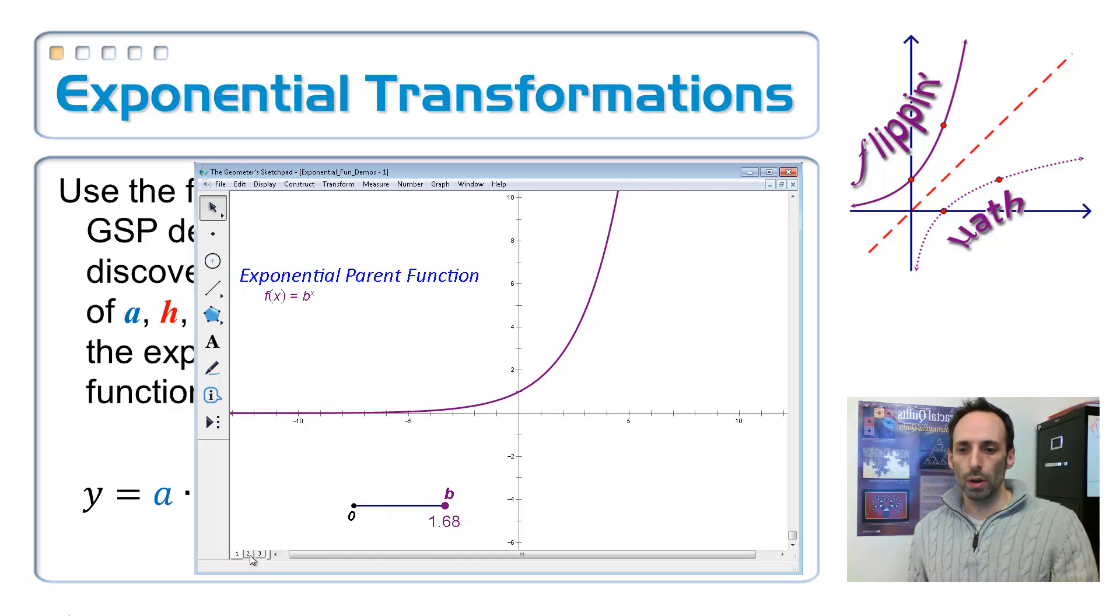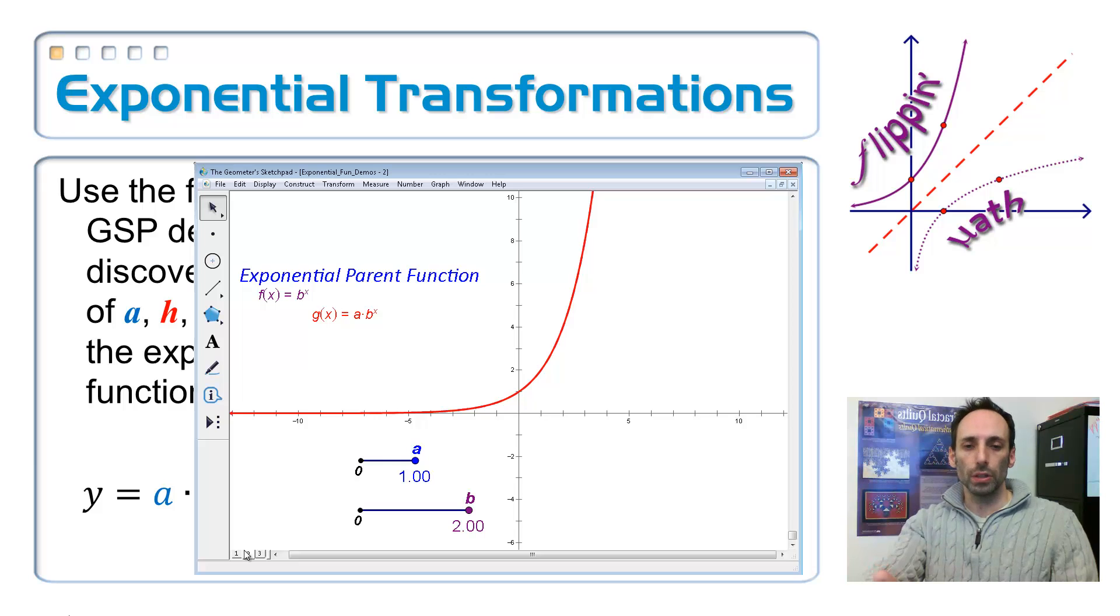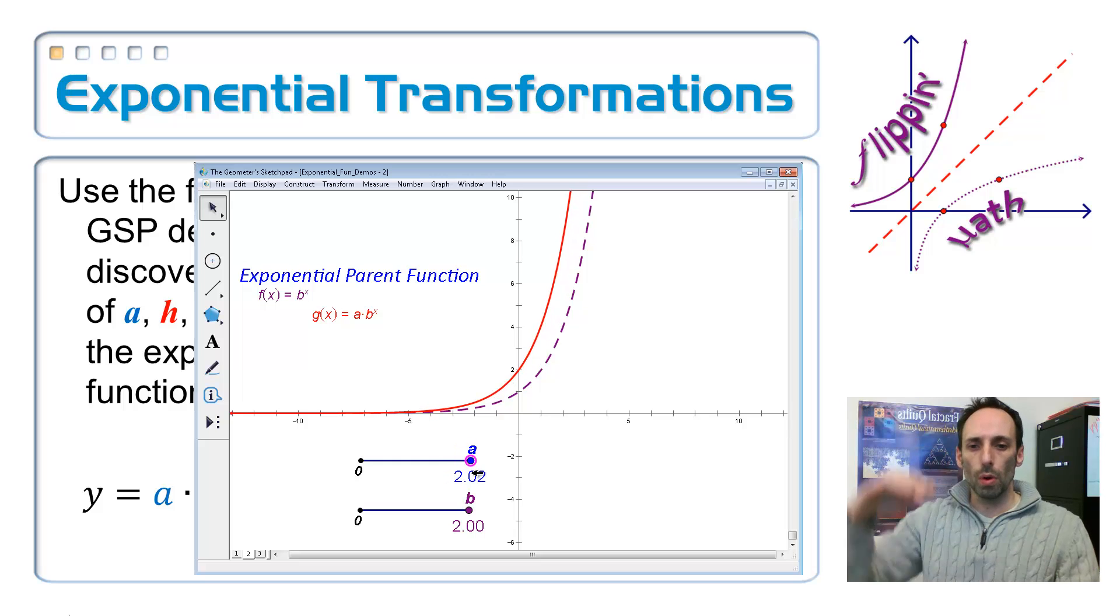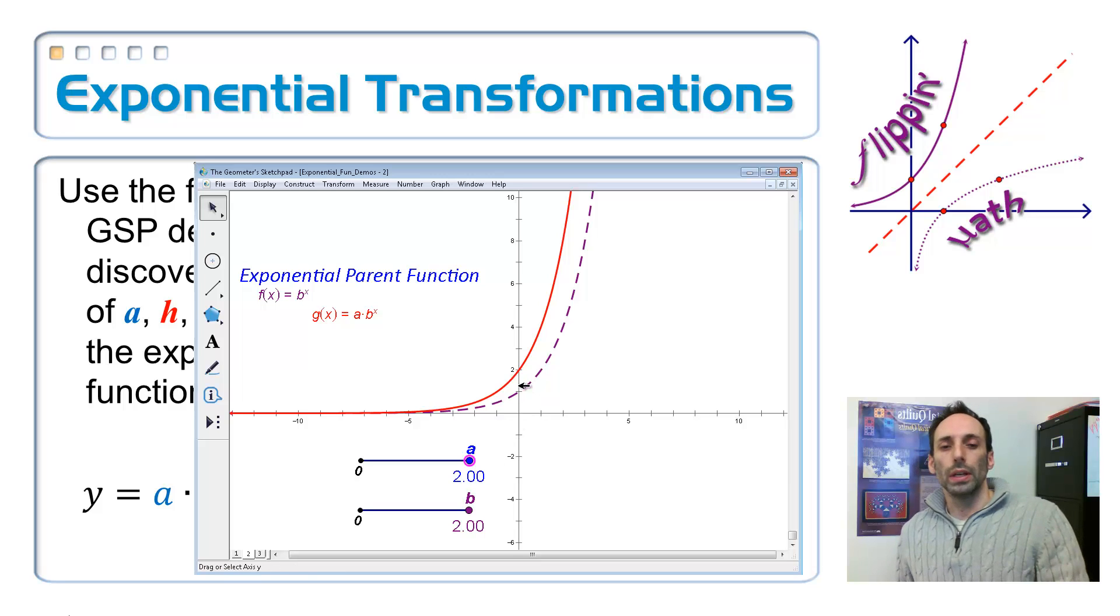Okay, so now let's look at the next part where I just pick a B value, and now let's look to see what the A value does. So the A value is being multiplied times B to the X. If I make it bigger than 1, of course it makes it steeper. It's multiplying all the Y values. So let me put it at, let's say, 2. So look at where the Y intercept is. It used to be at 1, and now it's at 2.